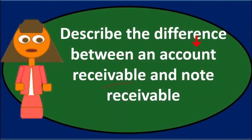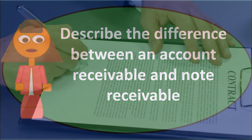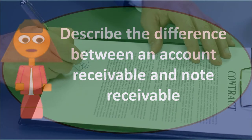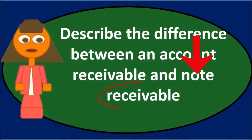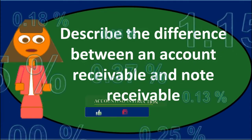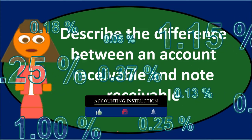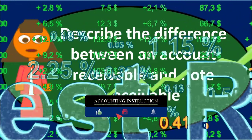If we are charging interest, the term is longer than 30 days, and the dollar amount is larger, we probably want some formal documentation — which typically happens with a notes receivable. This means we have a written promise to pay, listing out what the principal will be, what the interest will be, and what the terms of the note are. So the differences for a notes receivable are: it is usually in writing rather than a verbal agreement, the terms are usually longer, and we're usually charging interest.